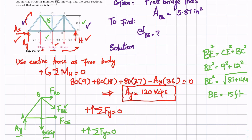BE is 15 feet. Letting theta be the angle of member BE, cos theta equals BC over BE, which is 12 over 15.